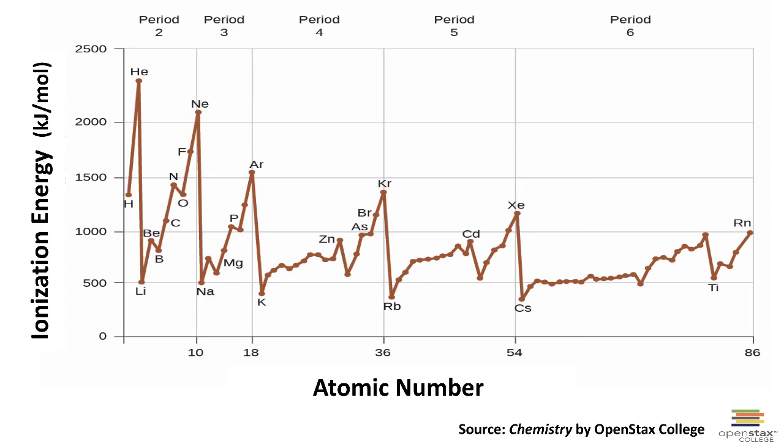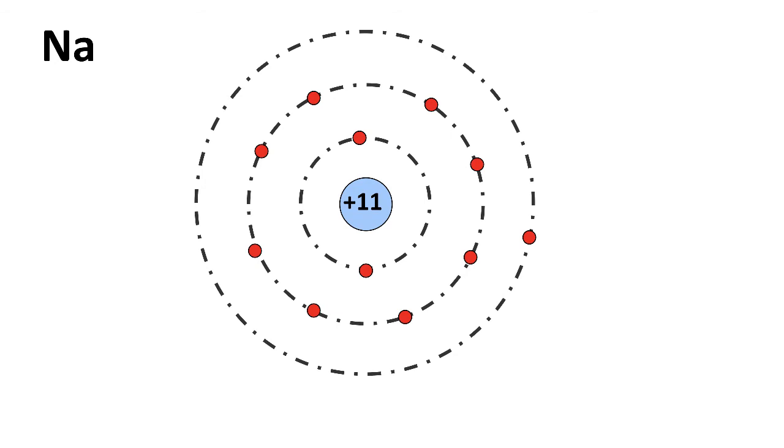This is explainable by what we know about electrons and where they are found in atoms. So let's take a look at this. Here is a very simple picture of an atom of sodium. It's got 11 protons and 11 electrons for the atom, two in the first shell, eight in the second shell, and one in the third shell.